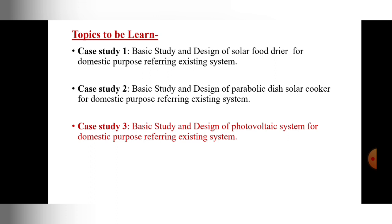We have to learn three case studies related to the applications of solar energy. The first case study we have learned already, that is related to solar food dryers. The second case study is related to parabolic dish solar cookers, and the third case study is related to the solar photovoltaic system. The first two case studies we have learned already, and today we are going to learn some topics from the third case study: the photovoltaic system.